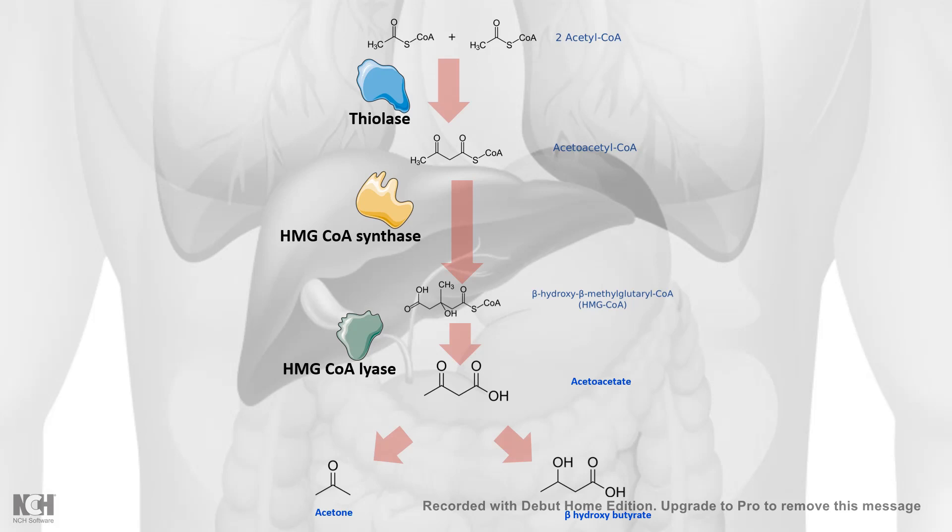Further, HMG-CoA is converted to acetoacetate by HMG-CoA lyase. Then acetoacetate can be broken down into beta-hydroxybutyrate and acetone — both of which are ketone bodies. The conversion of acetoacetate to beta-hydroxybutyrate is triggered by beta-hydroxybutyrate dehydrogenase, which reduces one of the keto groups to an alcohol group — that is the key structural difference between acetoacetate and beta-hydroxybutyrate.